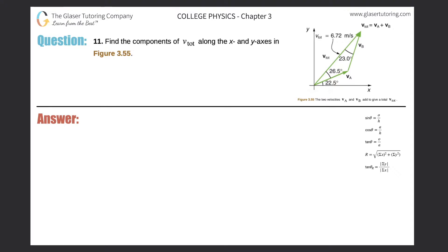Number 11, find the components of v-total along the x and y axes in figure 3.55. All right, so those of you who watched my prior video on number 10, we already covered this actually because we needed to know this in order to find the components of VA and VB. Although there are other ways to do that, I chose that method. So this should be relatively straightforward.